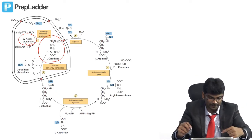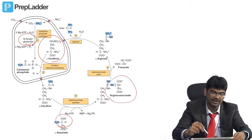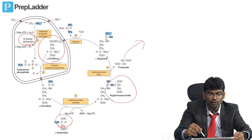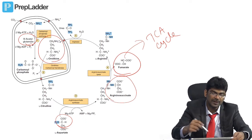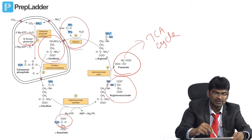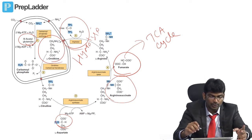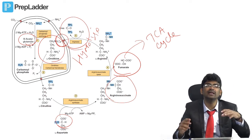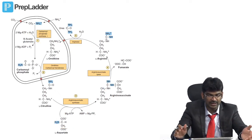Citrulline comes outside the mitochondria into the cytoplasm, then it reacts with aspartate to produce argininosuccinate. A lyase reaction then releases fumarate. Fumarate can go to the TCA cycle — the link between the urea cycle and TCA cycle is fumarate. Argininosuccinate lyase produces arginine. Then arginase performs a hydrolysis reaction on arginine to produce urea and ornithine. Ornithine goes back into the mitochondria and is regenerated — like oxaloacetate in the TCA cycle.